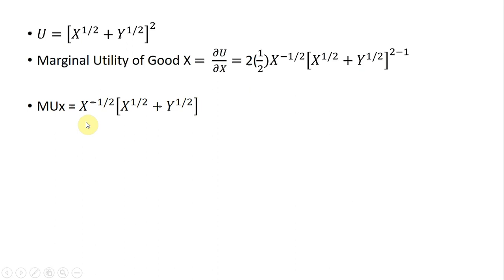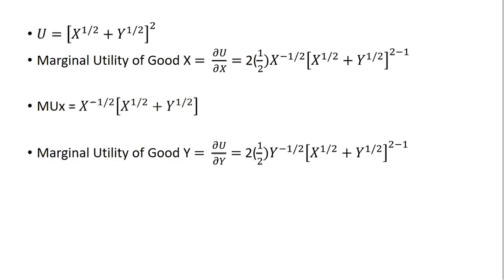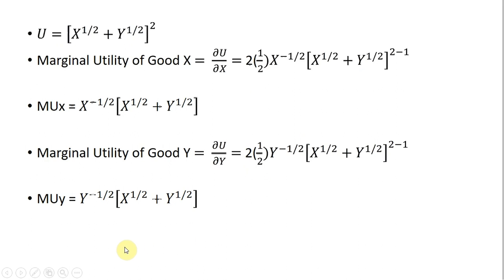Simplifying here, 2 times 1 half is just 1, so we get this result for the marginal utility of good x. The marginal utility of good y — taking the partial derivative of the utility function with respect to good y — we get a similar result: bringing the 2 down in front, taking the derivative of y to the 1 half, pulling that out in front of the brackets. After a little simplification, we get the marginal utility of good y.